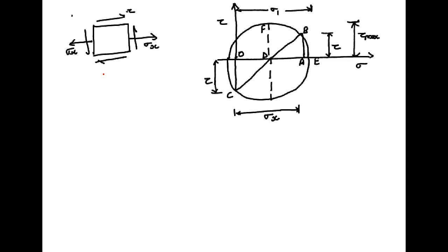When the shaft is subjected to a combination of loads, the shear stresses and principal stresses are generally obtained by constructing a Mohr's circle. Considering the shaft subjected to normal stress sigma_x and tangential stress tau, we construct a Mohr's circle to find the principal stress sigma_1 and the maximum shear stress.